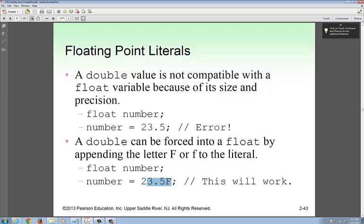However, you can put a float that's four bytes into a double that's bigger. You can put an F behind the literal. A double can be forced from a float by appending the letter F or f to the literal. Going from four bytes to eight bytes will work. This is called casting.